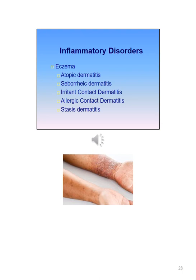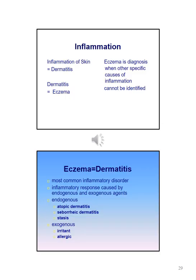Eczema is a type of inflammatory disorder. There are several different categories: atopic, seborrheic, irritant contact, allergic contact, and stasis dermatitis. When we are talking about inflammation of skin, we are referring to dermatitis. Eczema is the most common inflammatory disorder; it's an inflammatory response caused by an endogenous or exogenous agent.